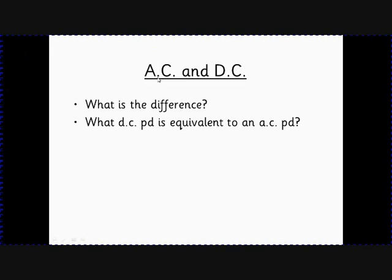Well done, this is our last little bit. This is about alternating and direct current. We need to know what the difference is, hopefully remember that from GCSE. The tricky bit is we need to know what DC PD, what direct current voltage, gives the same effect in a circuit as a peak AC PD.